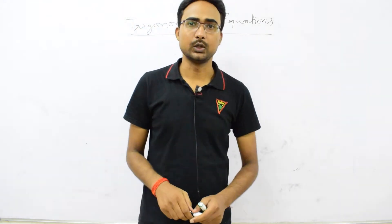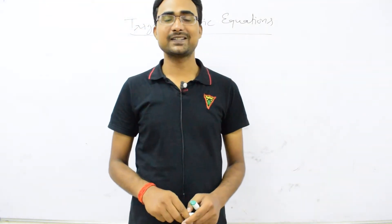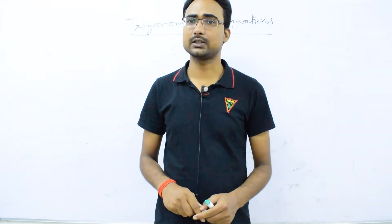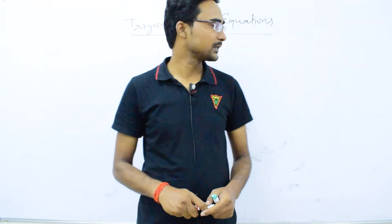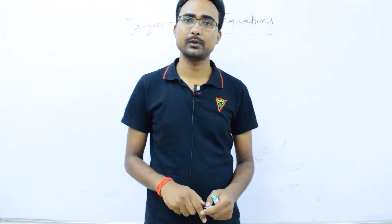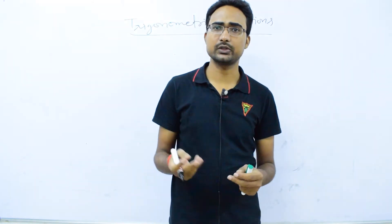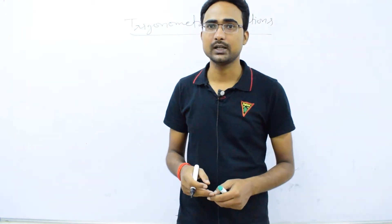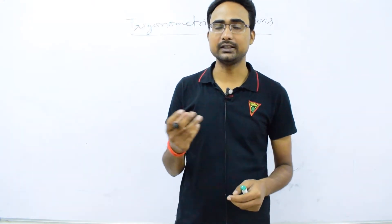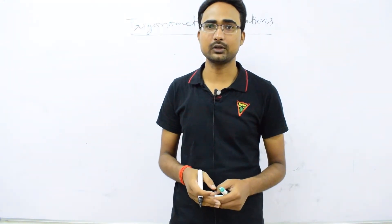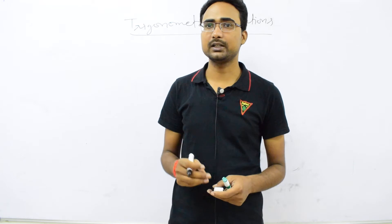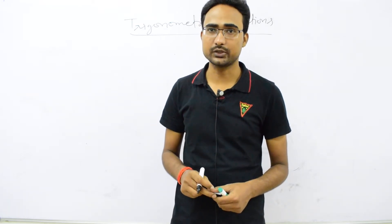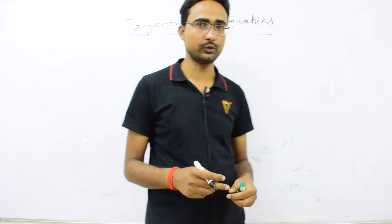Hello, student. Today we will study about the trigonometric equation and how to find the general solution of a trigonometric equation. In the previous segment, we studied about the general solution of sin θ = 0, cos θ = 0, tan θ = 0, sin θ = sin α, and cos θ = cos α. This segment, we will study about how to find a general solution when the square form is given.